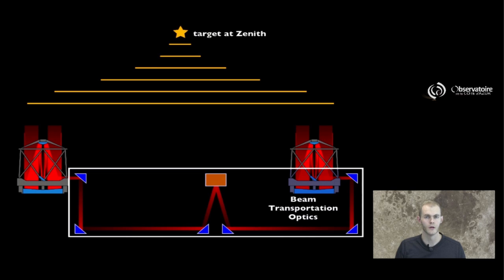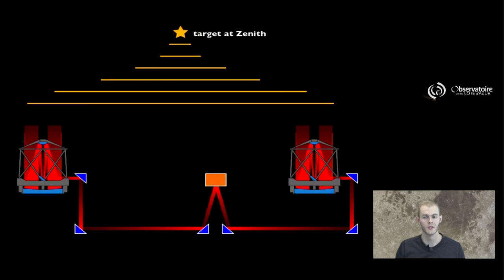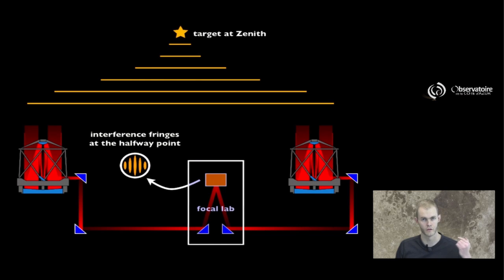Now we're going to use a lot more optics than just the optics of the telescopes themselves in order to send the light from the telescopes to the focal station. And we refer to these optics as beam transportation optics, or BTO for short. And another special place is, of course, going to be in the system, the focal lab itself, which we're going to cover in a bit more details in a later section.